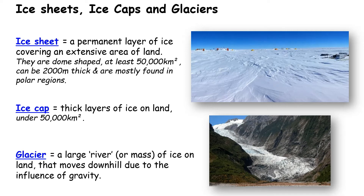Glaciers are different. They are rivers of ice that flow down valleys, moving downhill because of gravity.